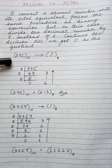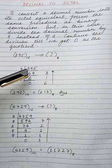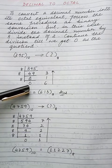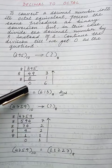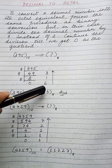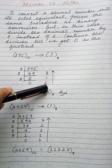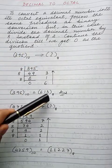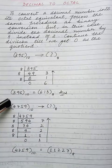See this example. 395 base 10 is to be converted to base 8. Divide by 8 — the quotients are written in one column and the remainders in another. We divide until we get the quotient as 0. The remainders are written in the answer from bottom to top. So 613 base 8 is the octal equivalent of this decimal number.